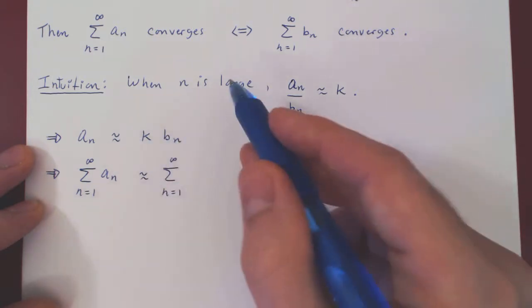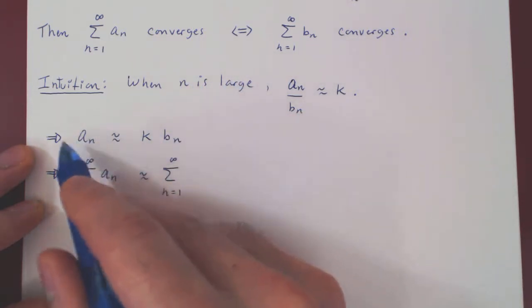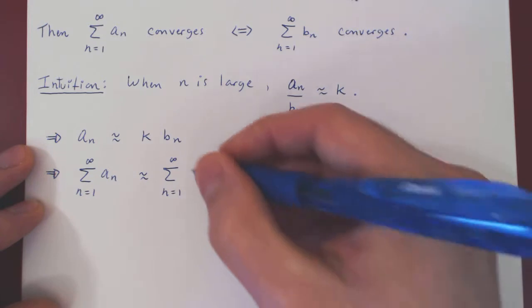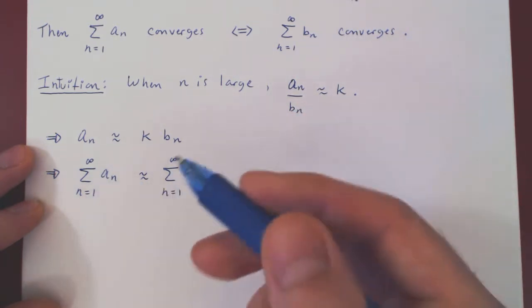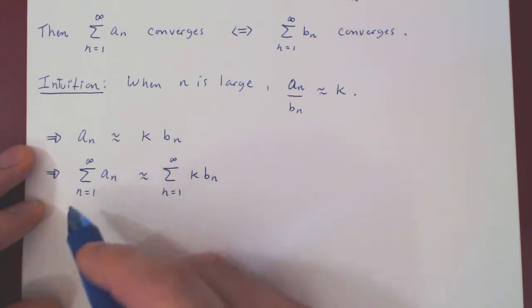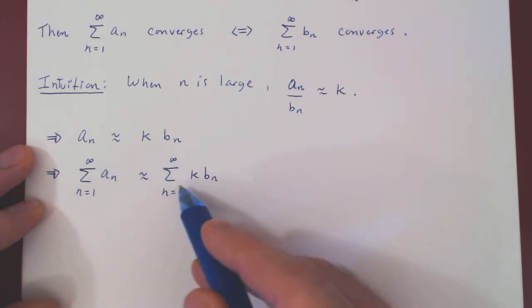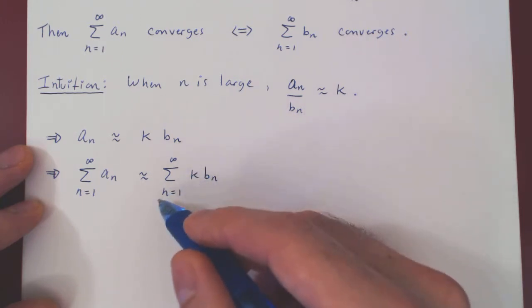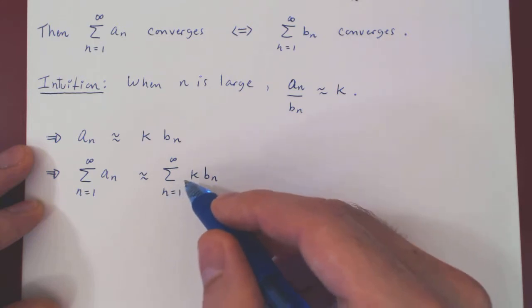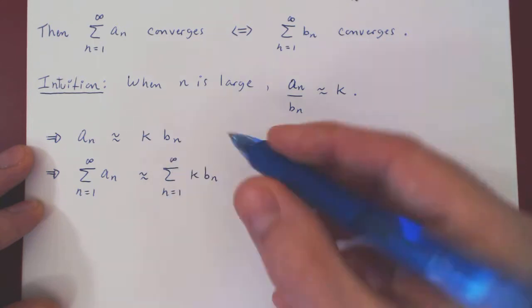As, for all intents and purposes, when n is large, an is roughly k times bn. So if we did ignore the first few terms, then these two sums should be approximately the same. But the point now is that k is a fixed constant. So with respect to n, it is a constant. So we can pull k out of the sum.